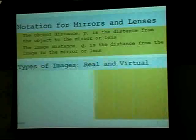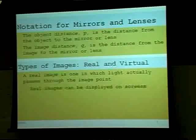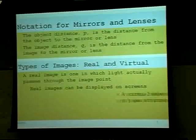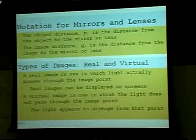Types of images — real and virtual. A real image is one in which the light actually passes through the image point. Real images can be displayed on a screen, as you actually have light creating that image. A virtual image is one in which the light does not pass through the point — light appears to diverge from that point, appearing to come from somewhere it actually is not.